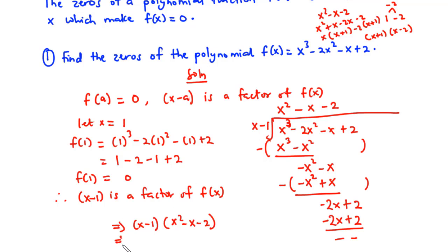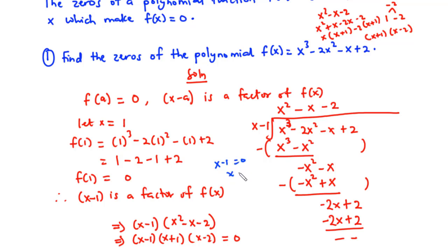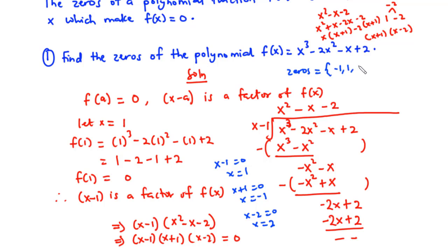The complete factors of f(x) are (x - 1), (x + 1), and (x - 2). To find the zeros, we equate each factor to 0. From x - 1 = 0, x = 1. From x + 1 = 0, x = -1. From x - 2 = 0, x = 2. So the zeros of the polynomial f(x) are -1, 1, and 2.